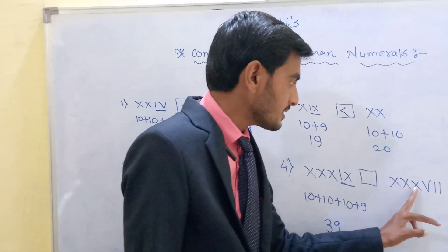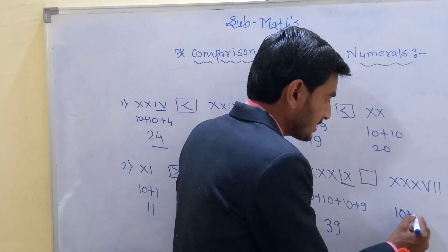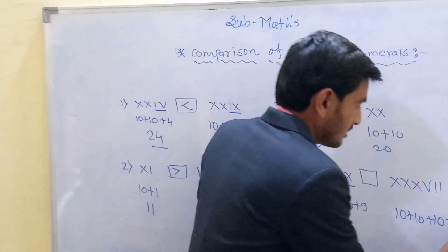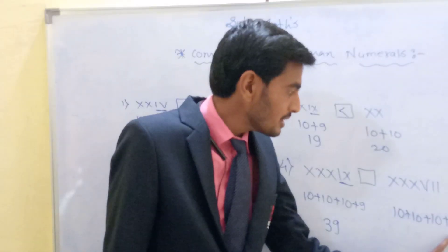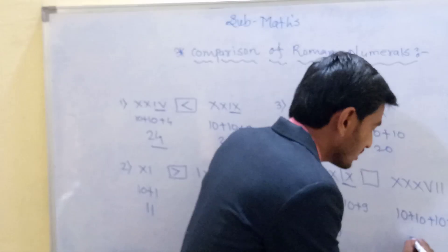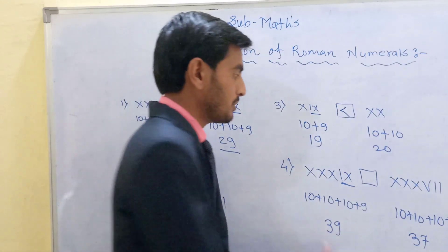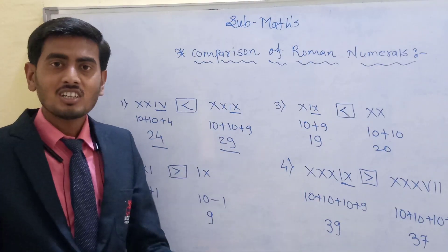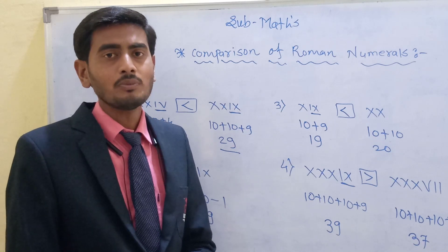Now for XXXVII: X is 10, plus 10, plus 10, V is 5, and I, I means plus 1, plus 1. So 10 plus 10 is 20, 20 plus 10 is 30, 30 plus 5 is 35, 35 plus 1 is 36, 36 plus 1 is 37. Comparing 39 and 37, 39 is the greater number. Students, similarly, solve question number 2 from exercise number 1, given on page number 85.